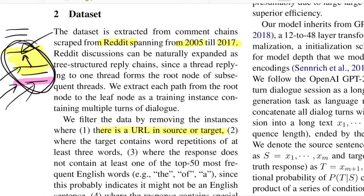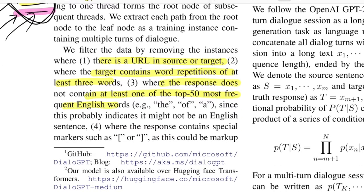The second rule removes instances where the target contains word repetitions of at least three words, helping the model avoid generating monotonous, repetitive output. The third rule removes responses that do not contain at least one of the top 50 most frequent English words — essentially a language identification check to ensure the model is only trained on English text. The fourth rule removes responses containing markup tags like opening and closing braces, which would signal the presence of HTML code.